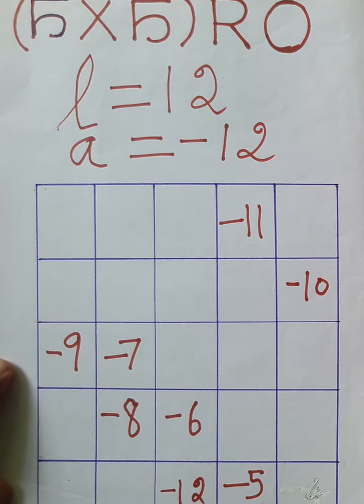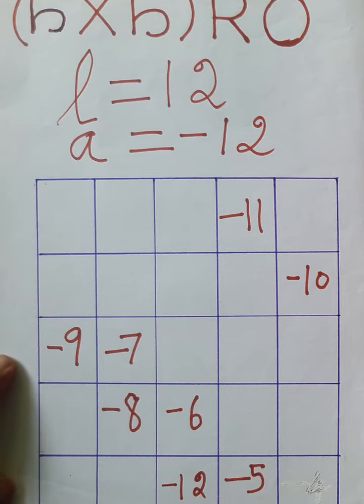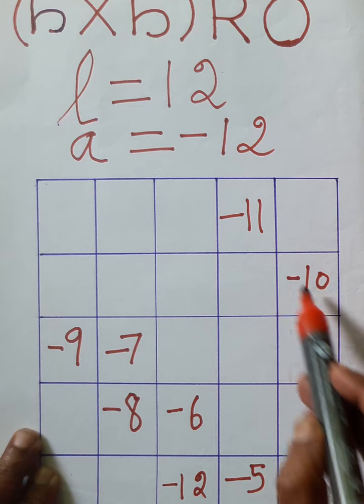I am going to move minus 12, minus 11, minus 10, minus 9, minus 8, minus 7, minus 6, minus 5, minus 4.